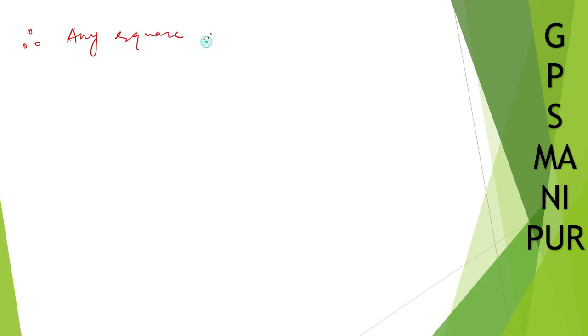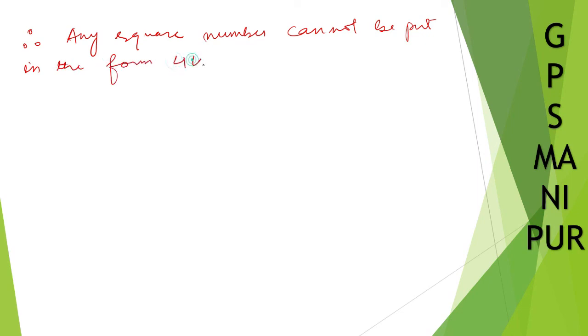Therefore, any square number cannot be represented — cannot be put in the form 4k plus 2. Okay, thank you so much, we'll meet in the next video.